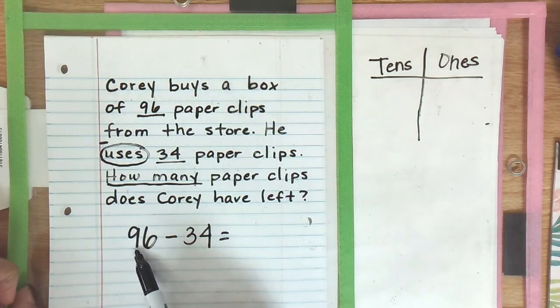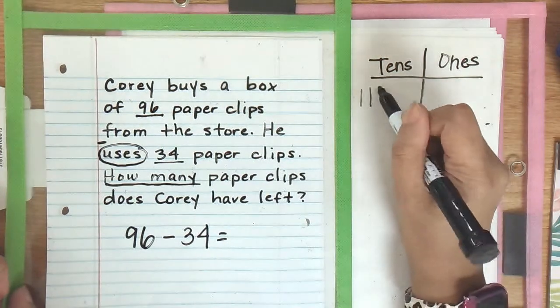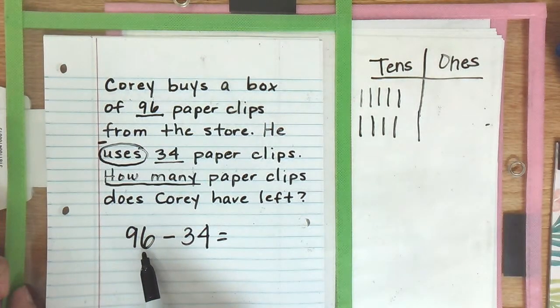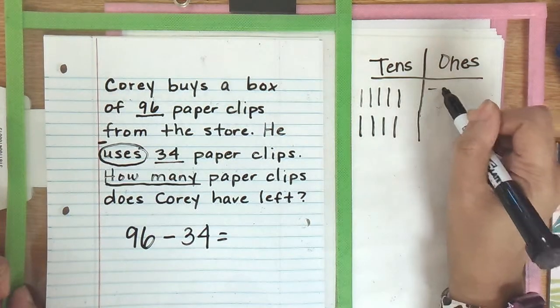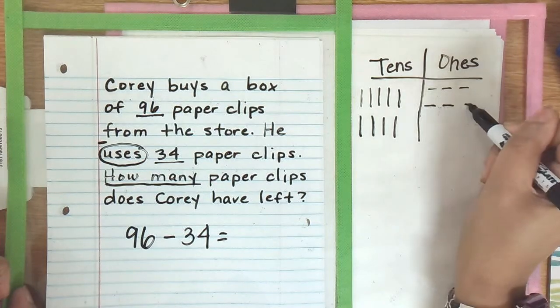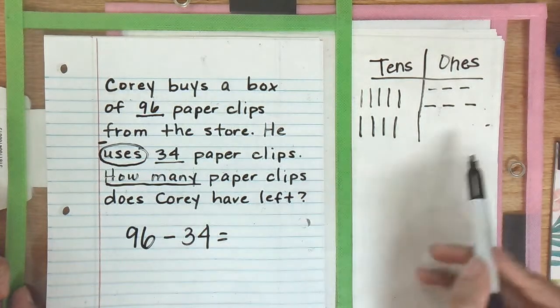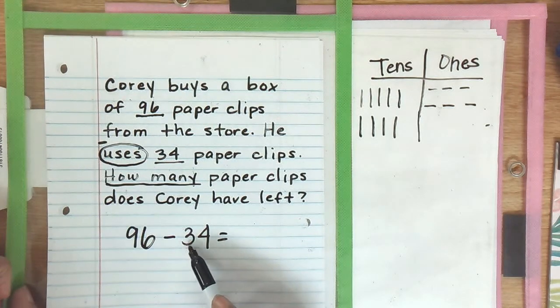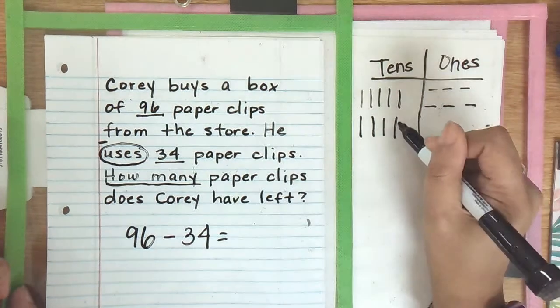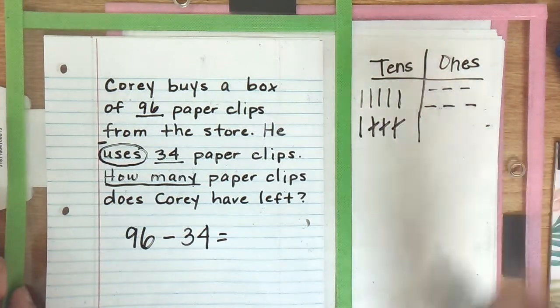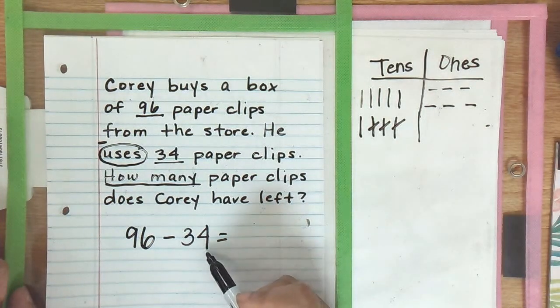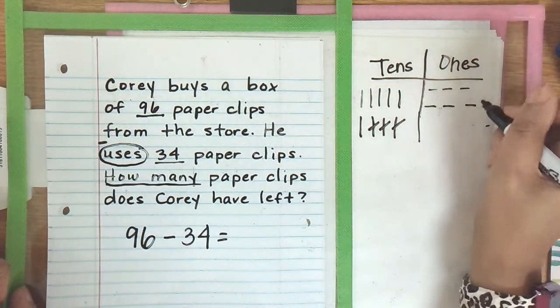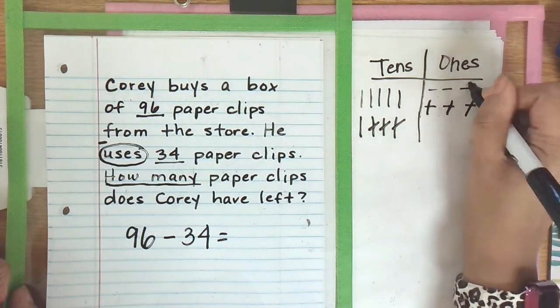In the number 96, there are nine tens: one, two, three, four, five, six, seven, eight, nine. In the number 96, there are six ones: one, two, three, four, five, six, and we are subtracting. So we're not adding anything to it. We're subtracting 34. We're going to start with our tens first. In the number 34, there are three tens. So I'm going to remove three tens: one, two, three. In the number 34, there are four ones. Let me see if I have enough. I do. I have six. I'm going to subtract the four ones: one, two, three, and four.